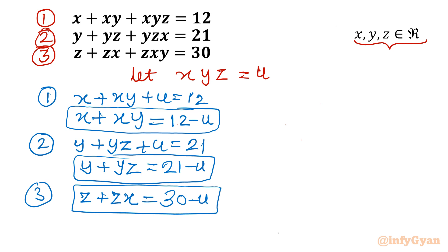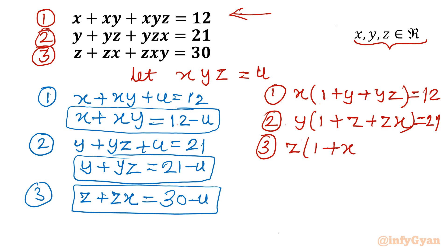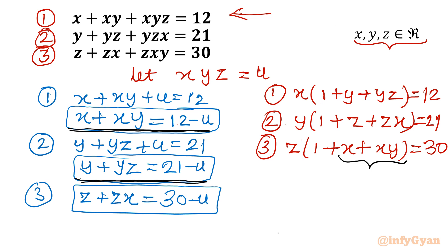Now I will take x, y, z common from equations 1, 2, and 3 respectively. From equation 1, taking x common: x times (1 plus y plus yz) equals 12. From the second equation, taking y common: y times (1 plus z plus zx) equals 21. And from the third equation, taking z common: z times (1 plus x plus xy) equals 30.